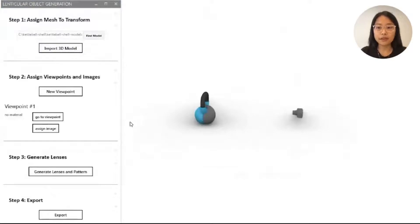At this viewpoint, the kettlebell is at the correct height, so I assign it the checkmark image.